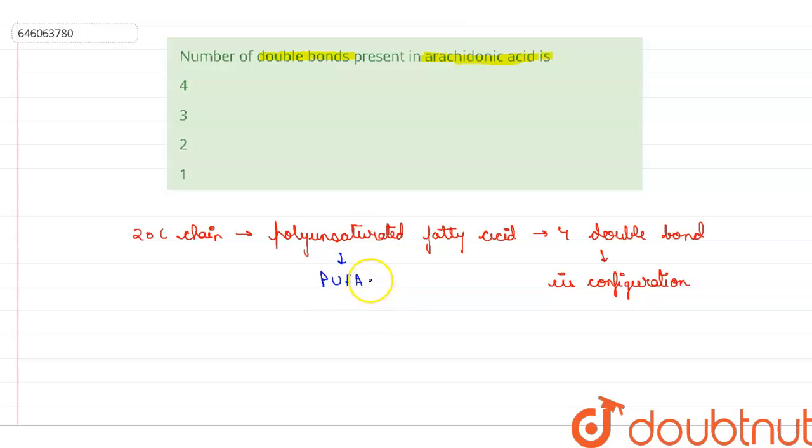And where is it present? It is mainly present in the membrane phospholipids and in the platelets. So it is present in the phospholipids and it is also present in the phospholipids.